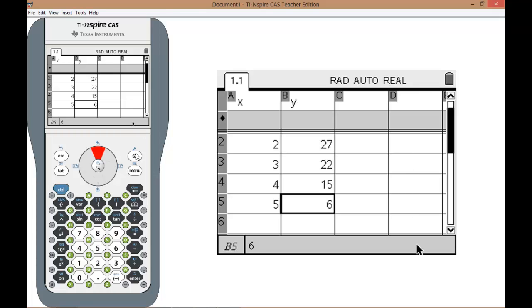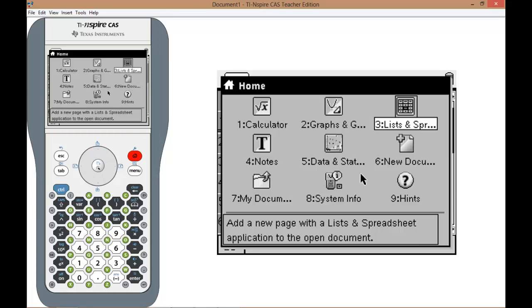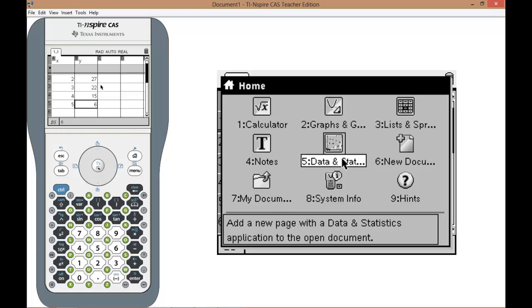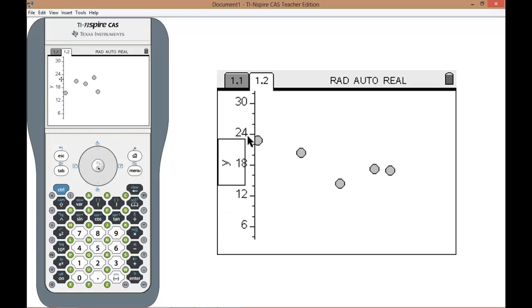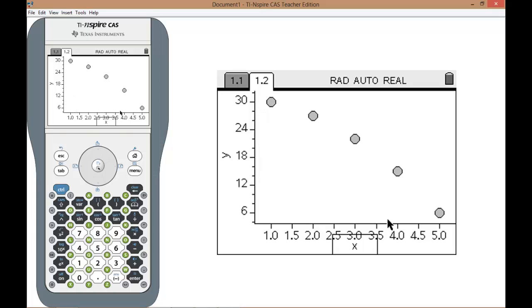In order to do that you click the home button, go to data and statistics. Now the random set of dots comes up. You want to put the y variable over here. There we go. And you bring the cursor down to the bottom and put the x value there.